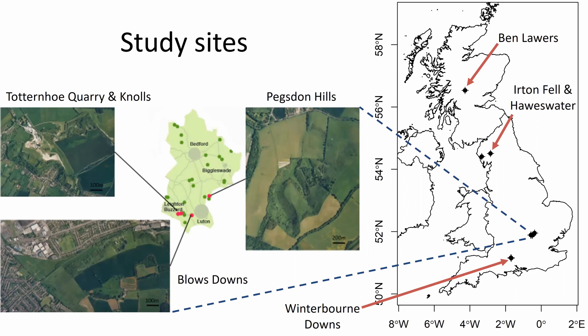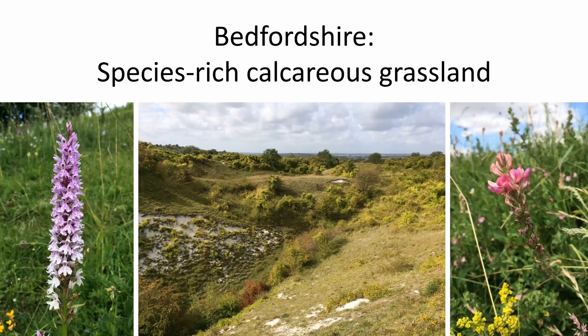This work was conducted primarily on Wildlife Trust reserves down in Bedfordshire — Totternhoe Quarry and Totternhoe Knolls, Pegsdon Hills, and Blow's Downs in south Bedfordshire — all owned and managed by the local wildlife trust. We also did some additional data collection at Winterbourne Downs, an RSPB reserve in Wiltshire, Orton Fell and Haweswater up in Cumbria, and Ben Lawers in Scotland. The sites in Bedfordshire are species-rich chalk grassland, topographically diverse with a range of vegetation structures, and species-rich in both insect fauna and flora including a fantastic range of chalk grassland specialist plants.